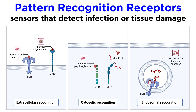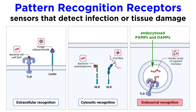but the location of pattern recognition receptors is also extremely important. Some are on the surface of cells, and can sense extracellular PAMPs and DAMPs. Others are cytosolic for intracellular sensing, and still others can be found in endosomes, an organelle formed during endocytosis. Endosomal pattern recognition receptors sense PAMPs or DAMPs that have been endocytosed from the extracellular space.